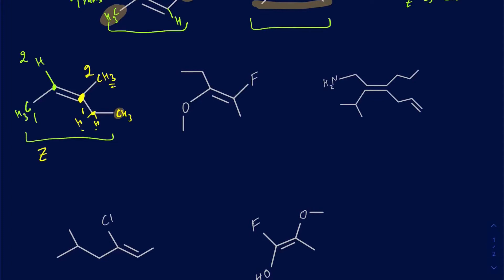Students might look at the two methyl groups being opposite and think it's trans, but that's not how you determine E/Z. Any time you have different substituents on the double-bonded carbons, you prioritize those groups based on atomic numbers. If the same priority groups are on opposite sides they are E, and if the same priority groups are on the same side they are Z.